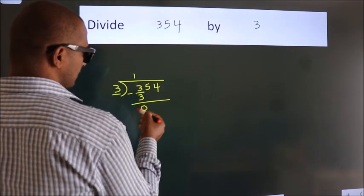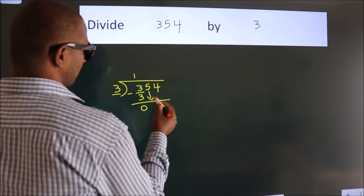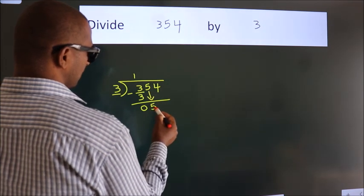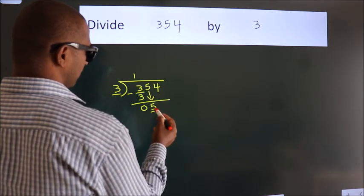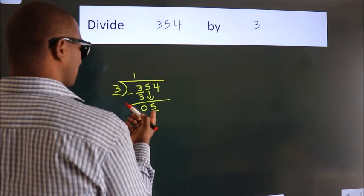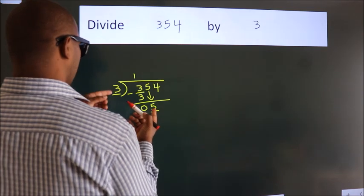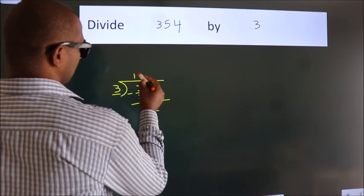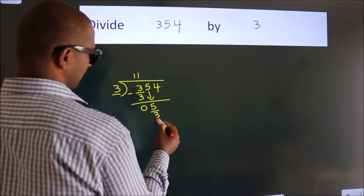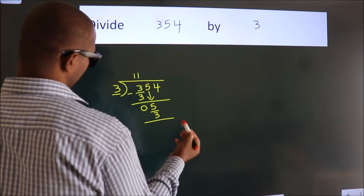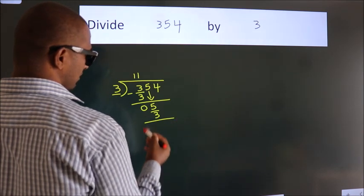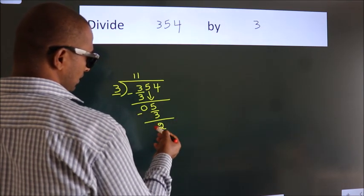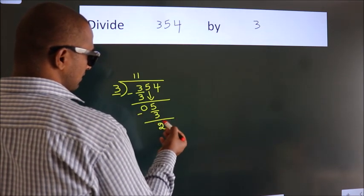After this, bring down the beside number. So 5 comes down. A number close to 5 in the 3 table is 3 once, 3. Now we subtract. We get 2.